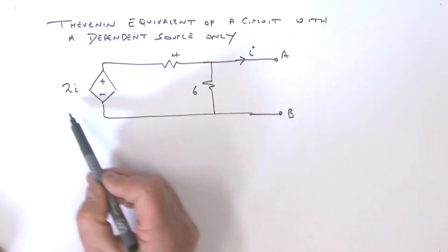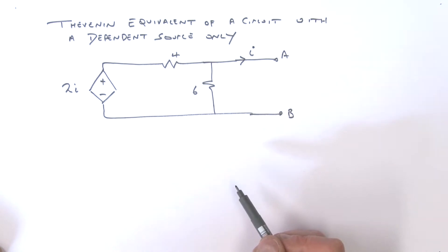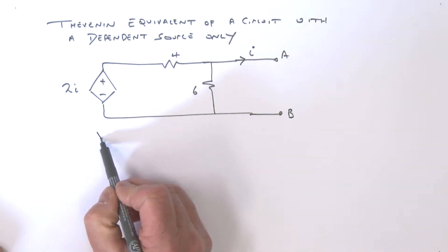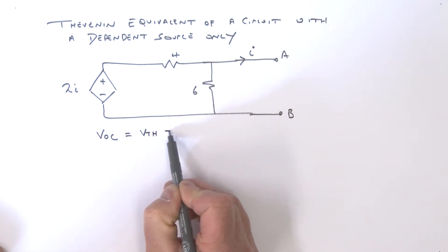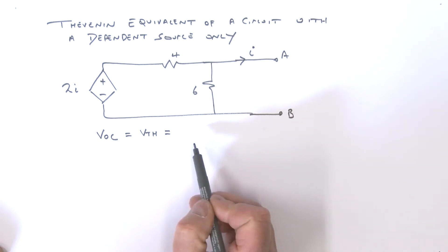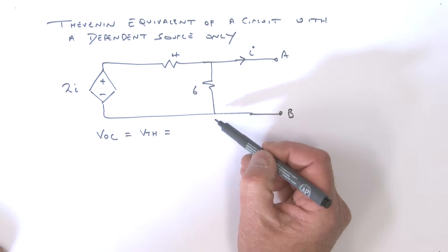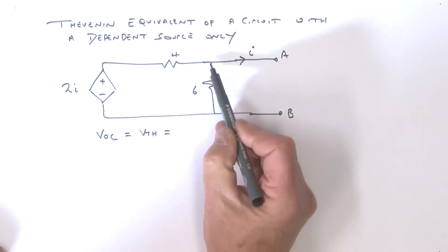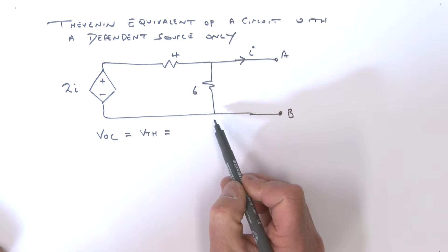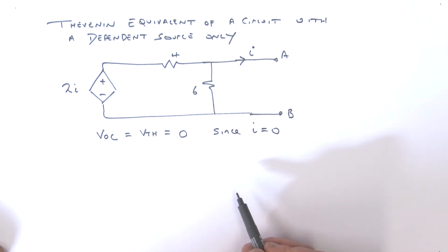So the question is: how do I come up with a Thévenin equivalent of this? Well, let's think about this. The open circuit voltage V_oc, which equals the Thévenin voltage — what is that? There is no current in this circuit. Since this terminal is open, I equals zero, so the open circuit voltage must equal zero.